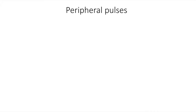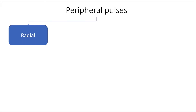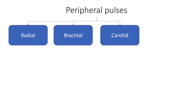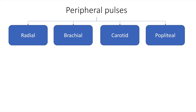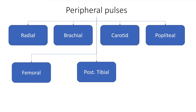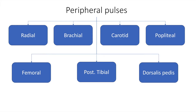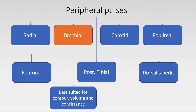The peripheral pulses that we can palpate are the radial, the brachial, the carotid, popliteal, femoral, posterior tibial and dorsalis pedis. For the purposes of discussion, the brachial artery is best suited for contour, volume and consistency. However, we rarely see the brachial artery being used for this purpose.